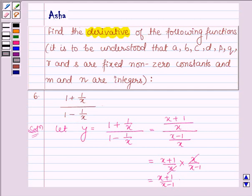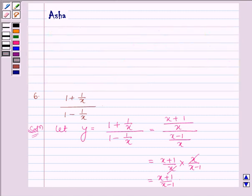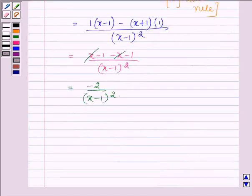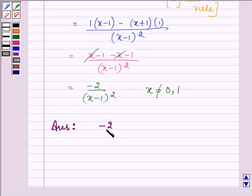Therefore, for X is equal to 0 and X is equal to 1, the function is not defined. Hence, we can say that this function is defined for all the values of X except X is equal to 0 and 1. So for these two values this function is not defined. Hence, our answer is the derivative of the given function is minus 2 upon X minus 1 whole square for X not equal to 0 and 1.